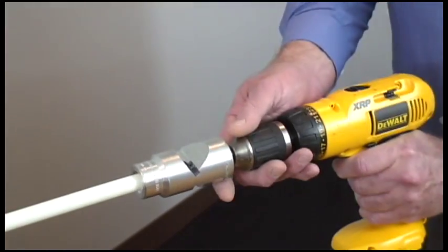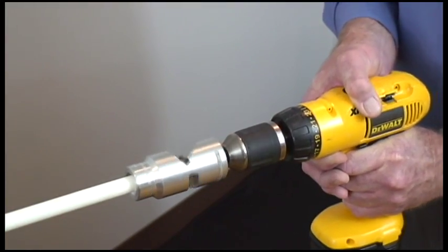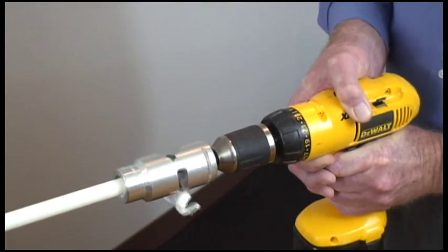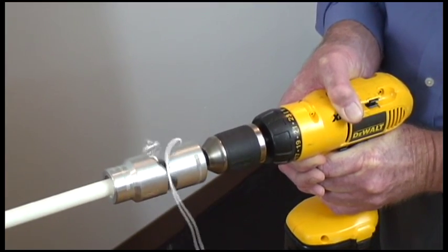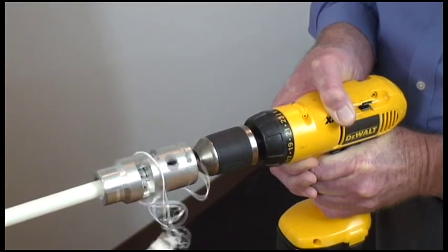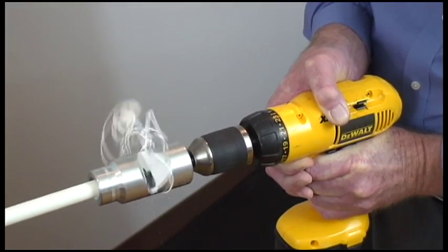Next, push the power coring tool onto the cable end using light force and rotating at a slow, steady speed. When the tool no longer cuts away material and spins freely, remove the tool while it is still rotating.